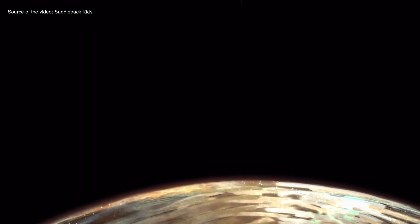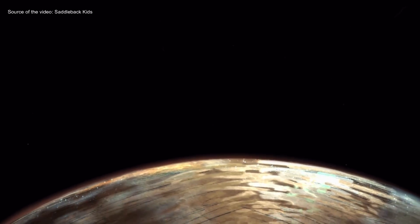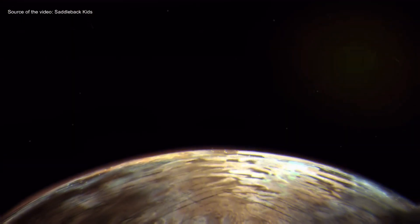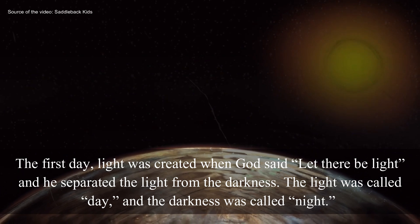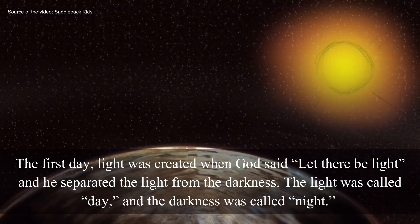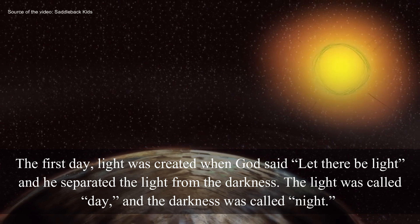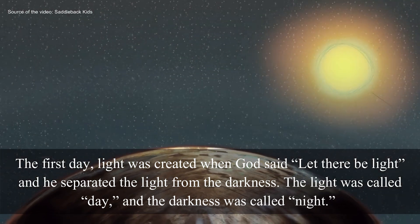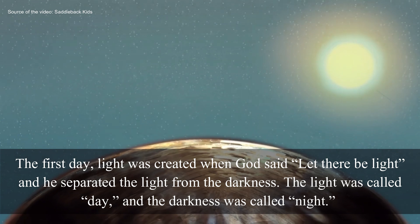In the beginning, God created the heavens and the earth. The first day, light was created when God said, Let there be light. And He separated the light from the darkness. The light was called day, and the darkness was called night.